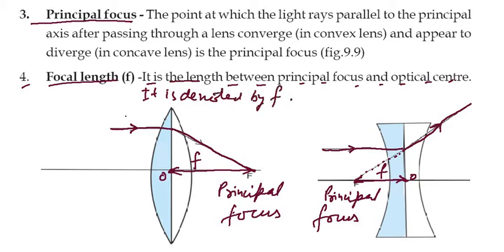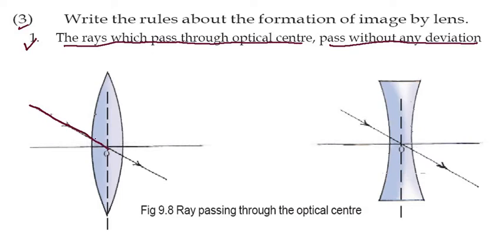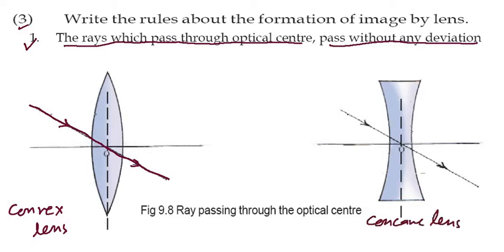Now third question: write the rules about the formation of image by a lens. First rule — the ray which passes through the optical center passes without any deviation. You can see the ray coming from this side, passing through the optical center, and going straight without bending. This applies to both the convex lens and the concave lens.